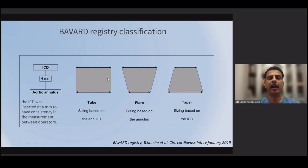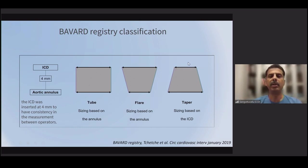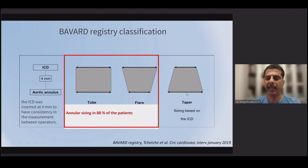In taper-type cases, sizing can be done according to the supra-annular size rather than the annulus, because anchoring of the valve occurs in a higher region. This helps avoid oversizing, which can lead to rupture and long-term valve durability issues. Based on the Bavard registry, it was suggested to measure the inter-commissural distance and the supra-annular area. If supra-annular narrowing is found, size the transcatheter valve 4 mm above the annulus. This approach was needed in only about 10 to 15% of patients.